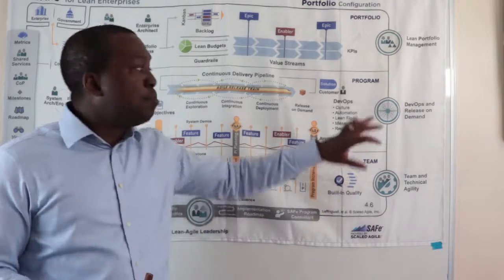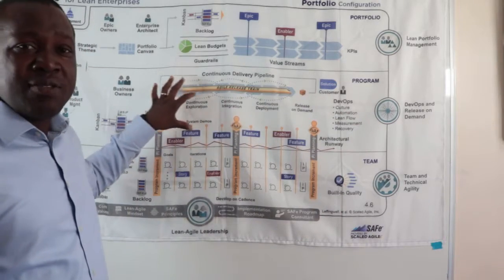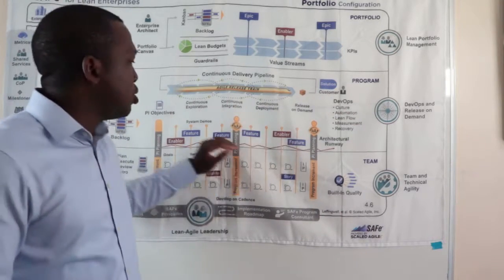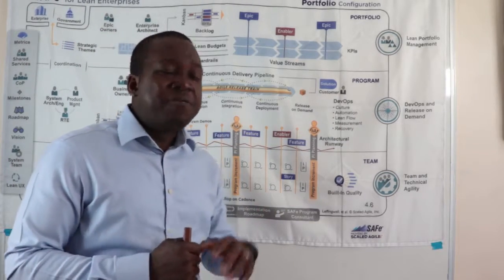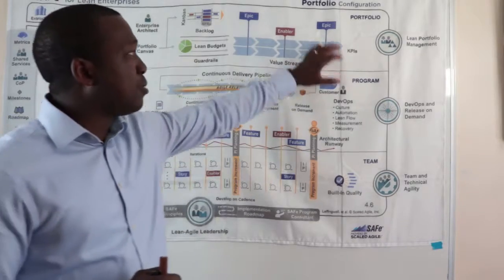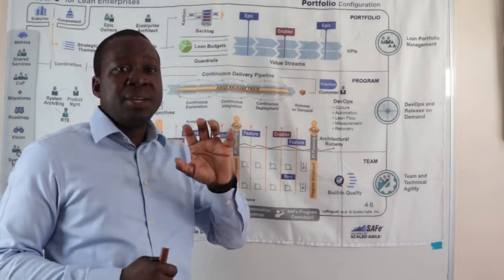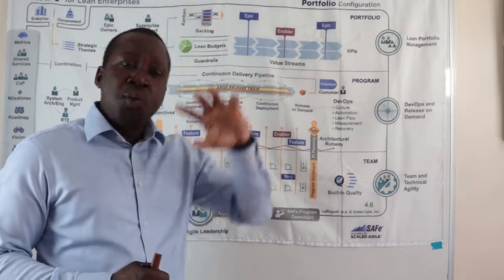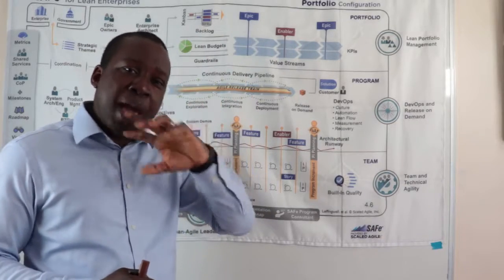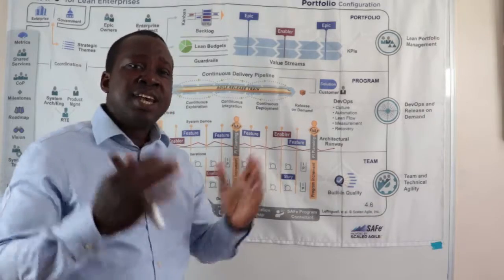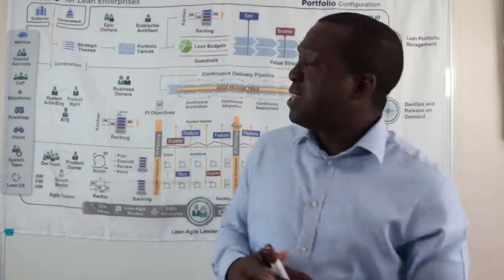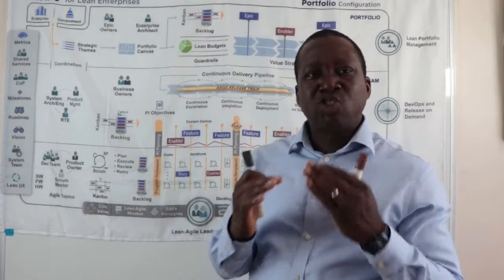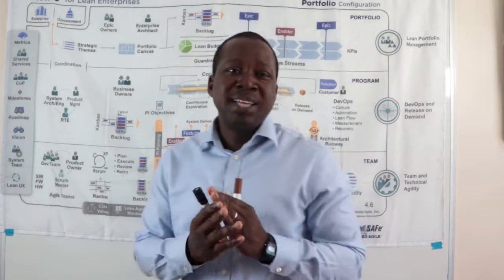That is the program layer we've just covered, and the program layer also includes the features and the enablers delivered by the team. The final layer is our portfolio layer where decisions are made, where epics are derived, and where business owners and epic owners will look at the business strategy and ensure they are aligning to the strategy. In this layer, we've got the enterprise or government, and they form the strategic plan.